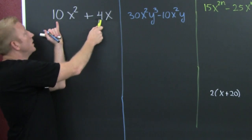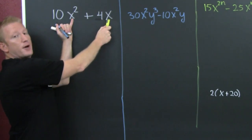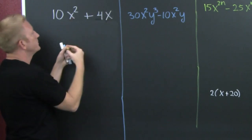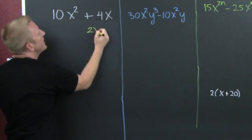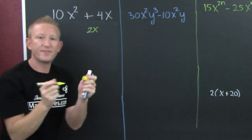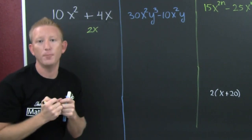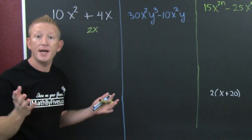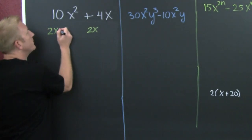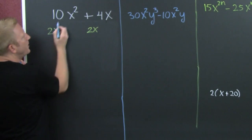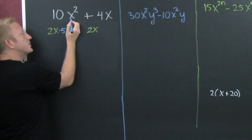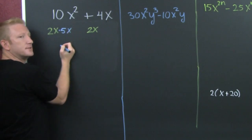It's a 2. What is the smallest power of x? It is a 1. So what do I want to do? I want to write that 2x — and that 2x. What do we multiply 2 by to get 10? It's 5. What do we multiply x by to get x squared? It's x.